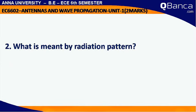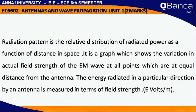What is meant by Radiation Pattern? Radiation Pattern is the relative distribution of radiated power as a function of distance in space. It is a graph which shows the variation in actual field strength of an EM wave at all points which are at equal distance from the antenna. The energy radiated in a particular direction by an antenna is measured in terms of field strength E, in volts per meter.